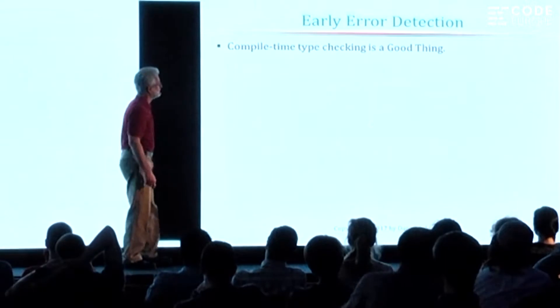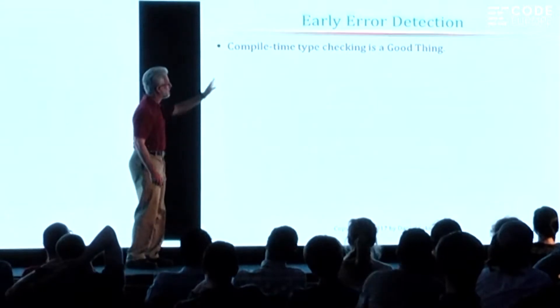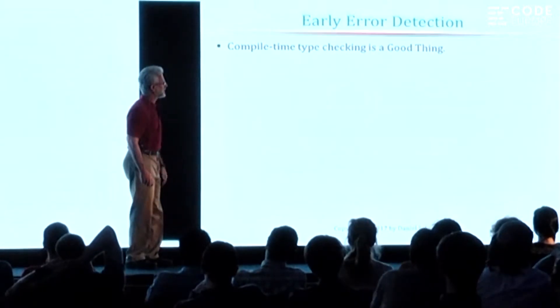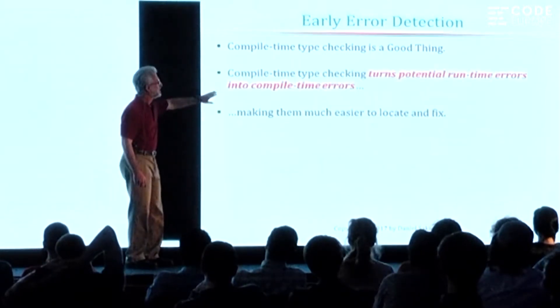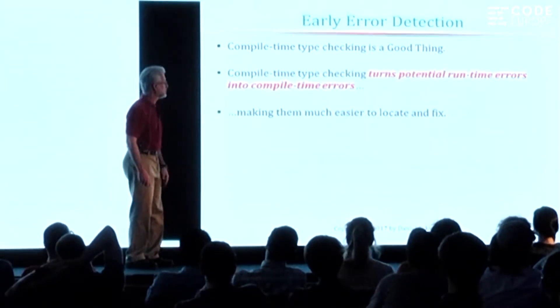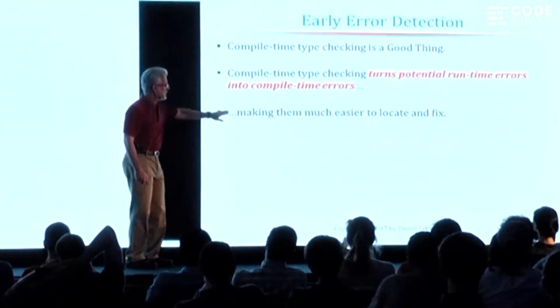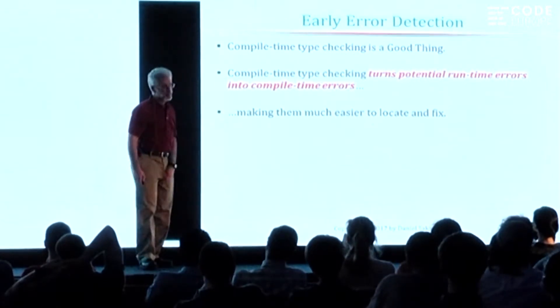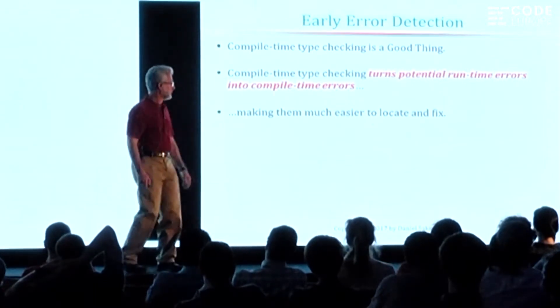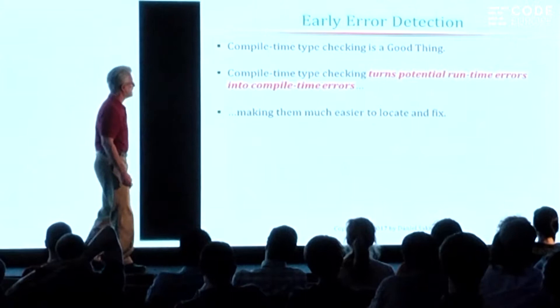Compile-time type checking is a good thing. It turns potential runtime errors into compile-time errors, and that makes them easier to locate and edit. That's the key point there.